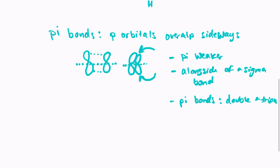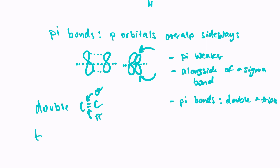If you have a double bond, one of those bonds is a sigma bond and the other is a pi bond. The general rule of thumb is that the sigma goes on top and the pi goes on bottom. With a triple bond, such as nitrogen triple bonded to itself, the sigma bond is on top and the other two bonds are pi bonds. So in a double bond: one sigma and one pi; in a triple bond: one sigma and two pi.